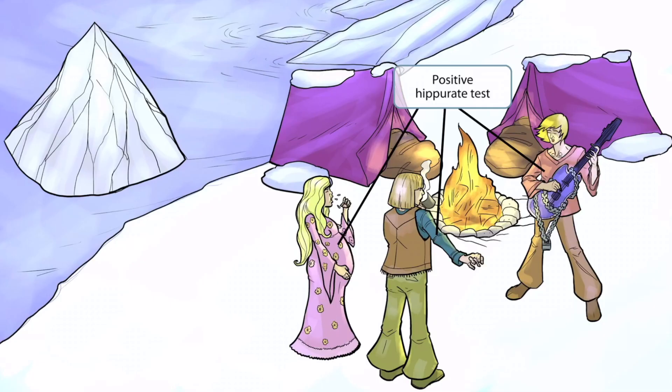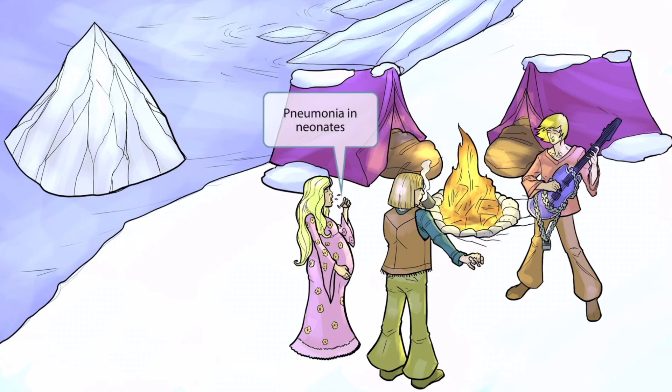Now let's talk about these hippies. Hippies sounds kind of like hippurate, so the three hippies together should help you remember that Group B Strep has a positive hippurate test. This just means that Group B Strep can hydrolyze the compound sodium hippurate.